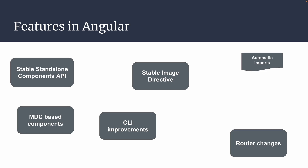The second feature is the stable image directive. In Angular 14, an image directive was introduced but was not completely stable. In this release it is completely stable with high performance. There is also automatic imports, which we'll cover with an example. Additionally, material components have been migrated — some components were rewritten to adopt Material Design Components (MDC). There are also many CLI improvements and router changes which we'll cover in detail.